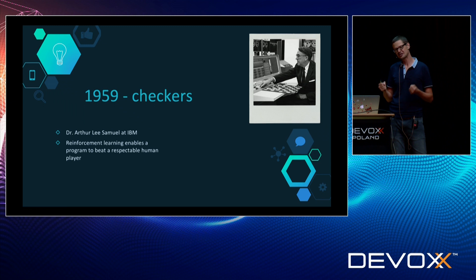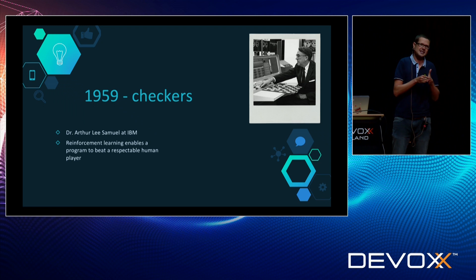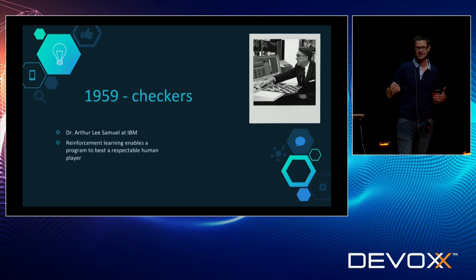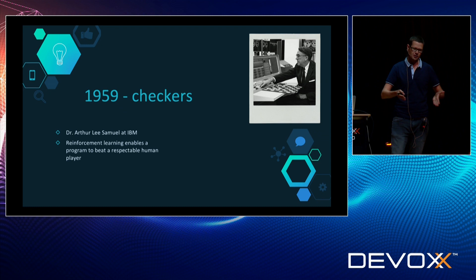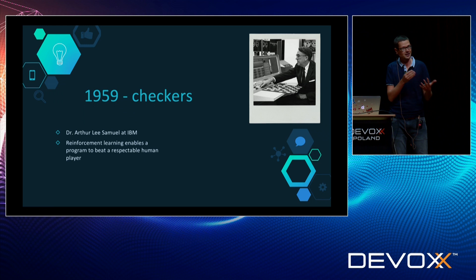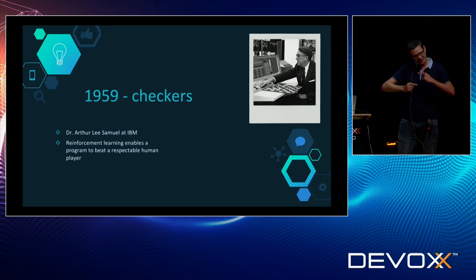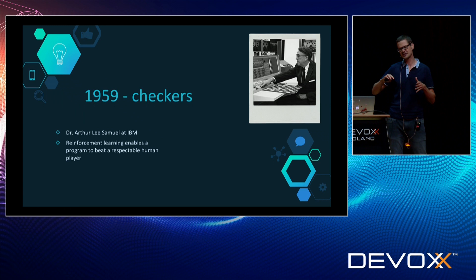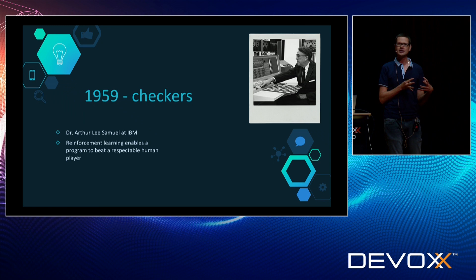What is really interesting is that at the time, the computers were not very strong — the memory was really small. So that program couldn't just explore all the possible paths on the checkers board. He had to come up with a different way to make that program win. He came up with some basic reinforcement learning where there's a function that, given the state of the board, can evaluate or predict the likelihood of winning. He was also tuning that function using real games from professionals, and then running this program to play against itself. He couldn't just brute force it — he had to come up with a smart way to create a winning program.